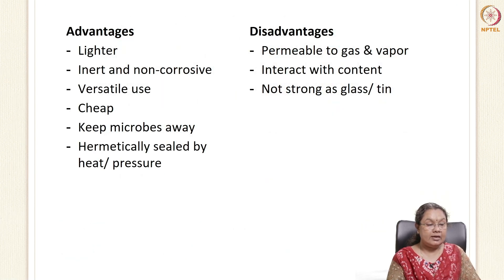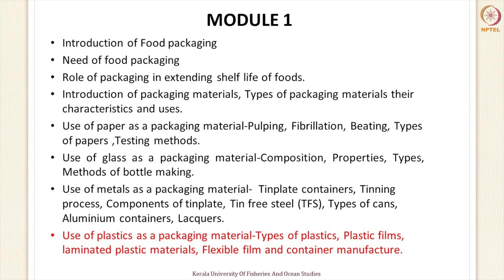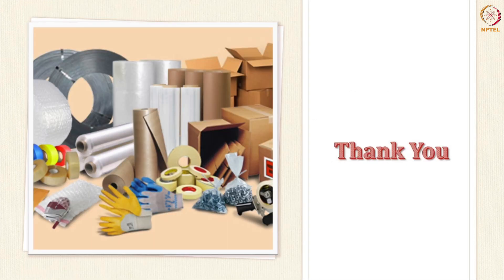Plastic containers are lighter, inert, non-corrosive, versatile, cheap, keep microbes away, and can be kept airtight using heat or pressure. The disadvantages are that many plastic bottles are permeable to gas and vapor, can interact with the contents, and are not as strong as glass or metal. This brings us to the end of this session, in which we discussed different types of polymers, their properties, and the methods by which plastic containers can be developed. Thank you.